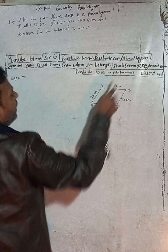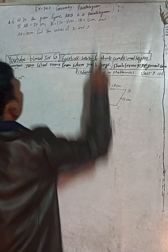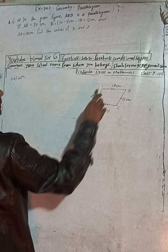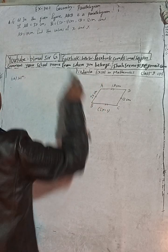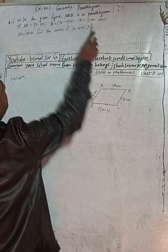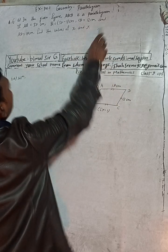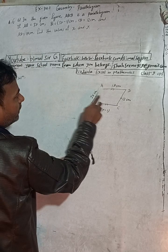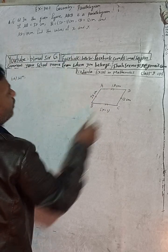Here the question is: in the given figure ABCD is a parallelogram. If AB is equal to 3cm, BC is 5y minus 1, CD is 12cm, and AD is 19cm, find the value of x and y.